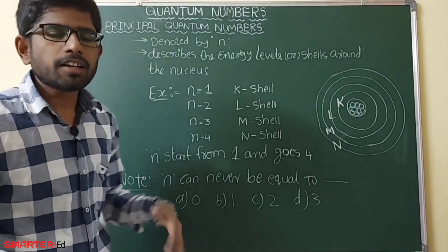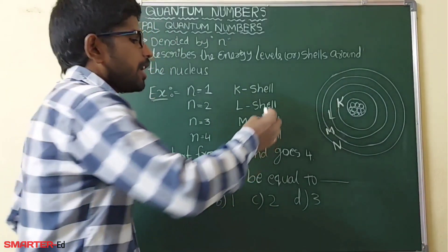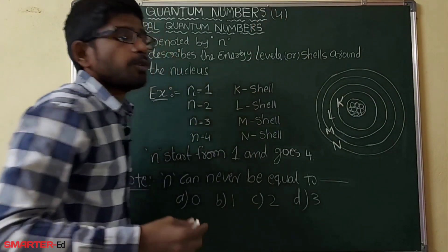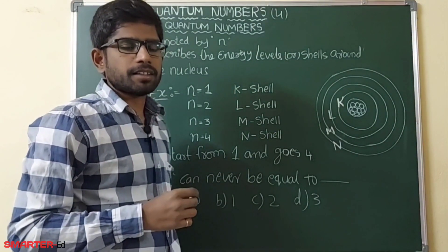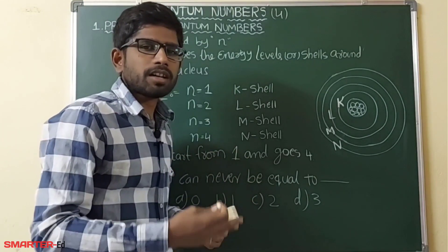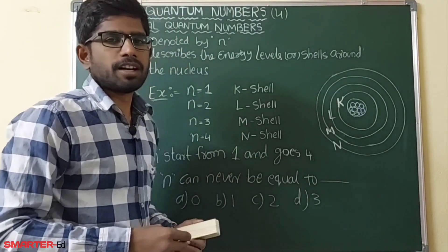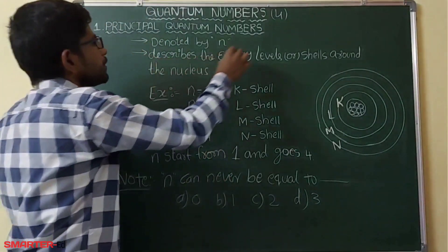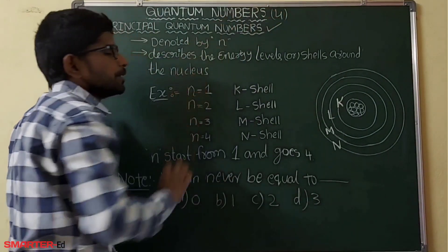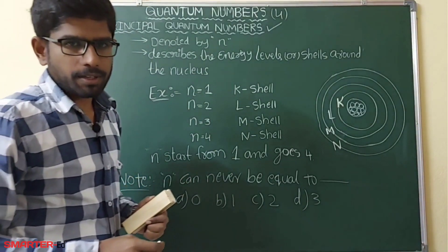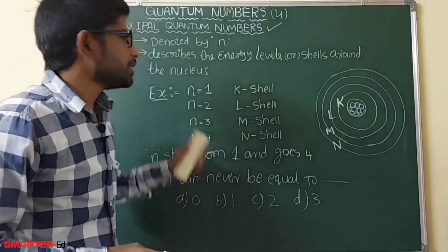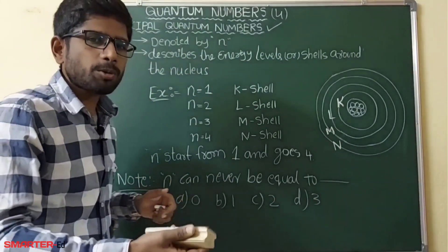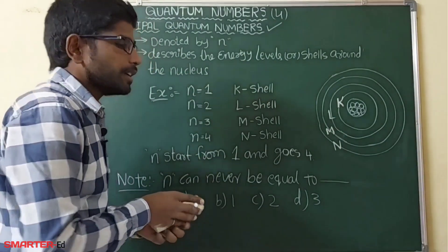We have four quantum numbers. Now we will see them one by one. The first quantum number is the principal quantum number. Now we will see what this principal quantum number is about.